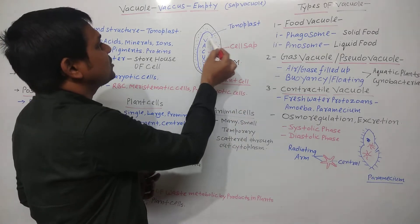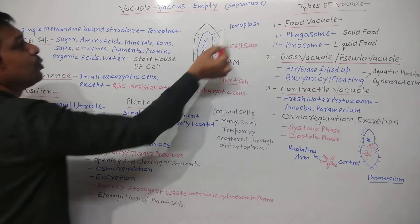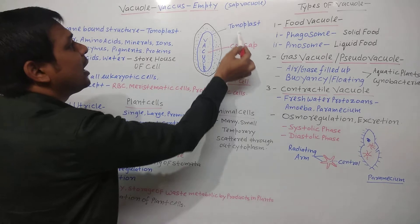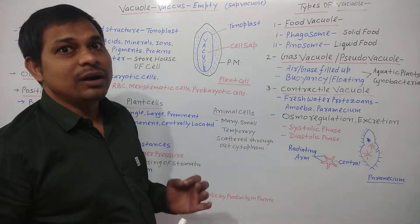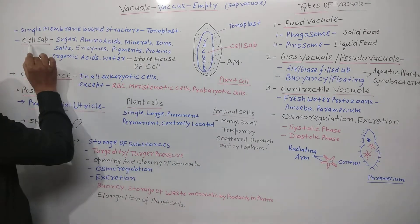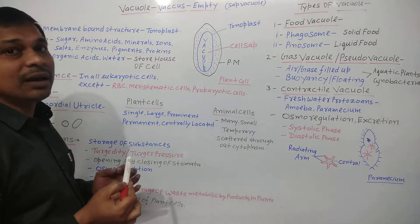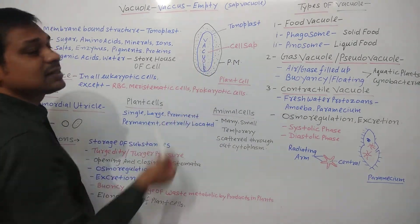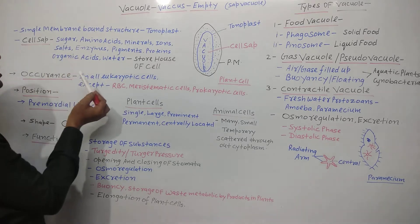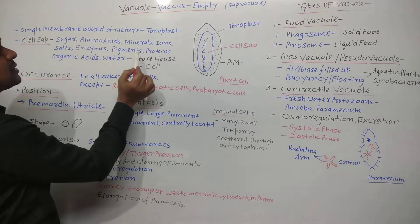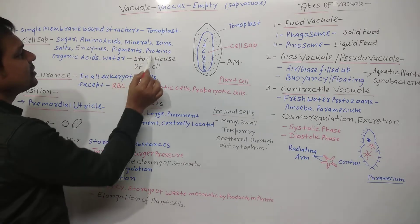The tonoplast is selectively permeable, or differentially permeable, meaning it allows the exchange of certain selected molecules from the cytoplasm into the vacuole and from inside back to the cytoplasm. So the tonoplast is selectively permeable and chemically and structurally similar to the plasma membrane. The content present inside the vacuole is known as the vacuolar sap or cell sap, and this cell sap contains various materials.